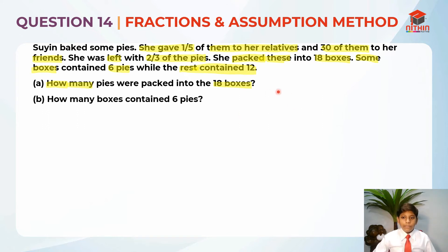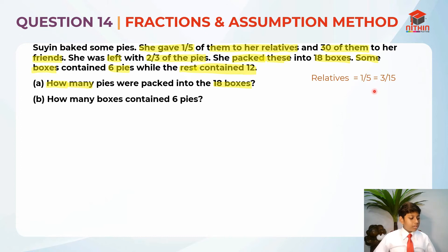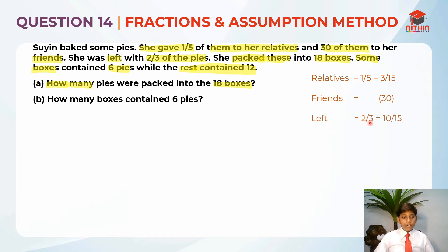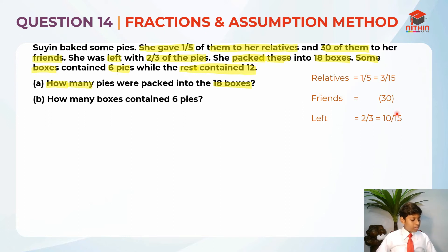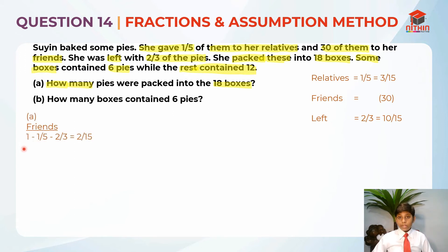First, we list down what she gave to her relatives: one-fifth. She gave to her friends 30, but we do not know the actual fraction. She was left with two-thirds. What I did here is to make all of them the common denominator, which is 15. So to find the friends' fraction, we take one-whole minus one-fifth minus two-thirds, which gives us 2 over 15. So 2 over 15 represents the friends.